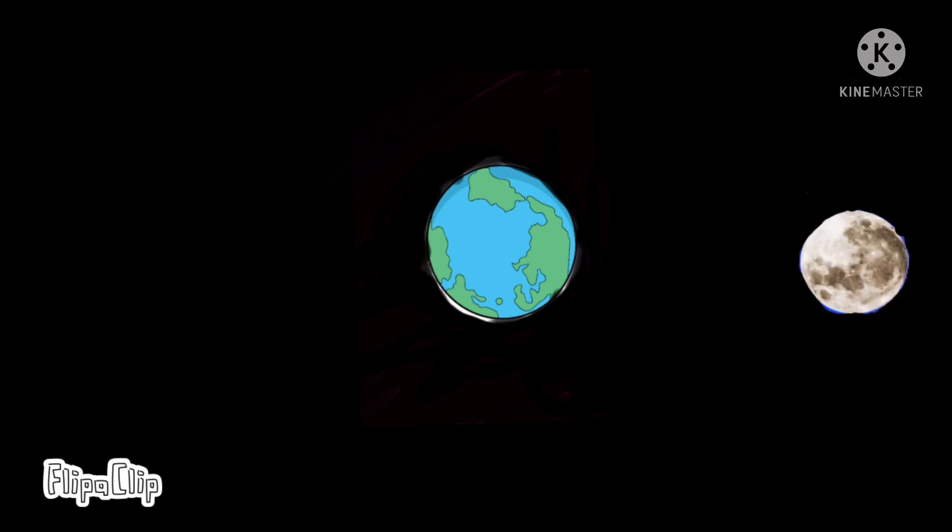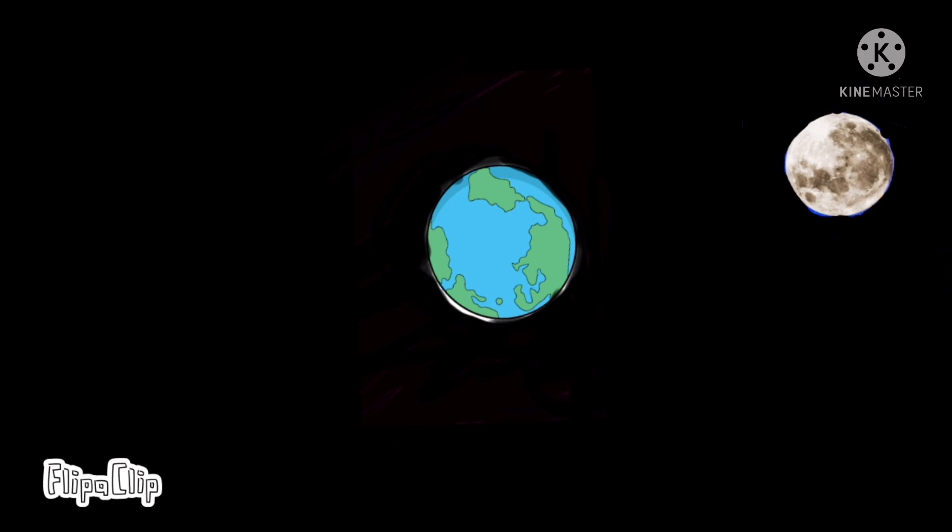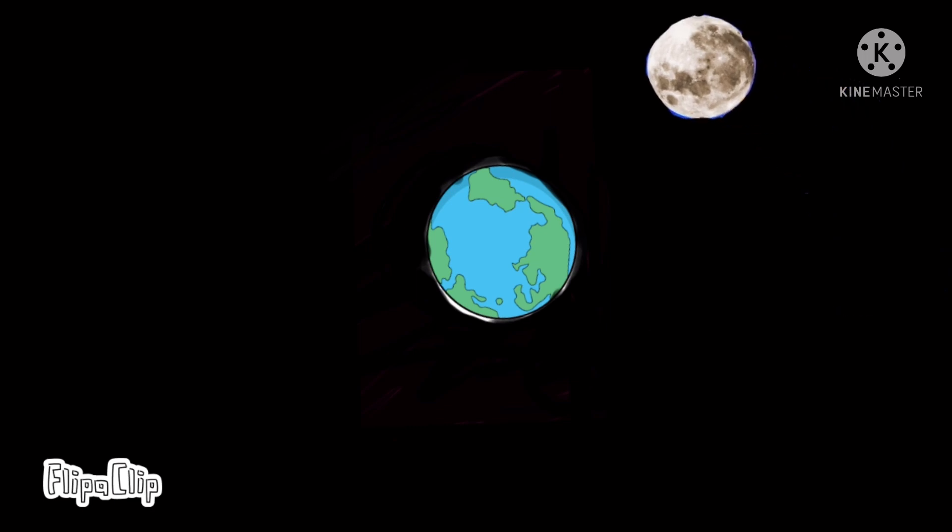It is the natural satellite of earth. The moon revolves around the earth. The part of the moon facing earth is known as the near side and the other side is known as the far side.